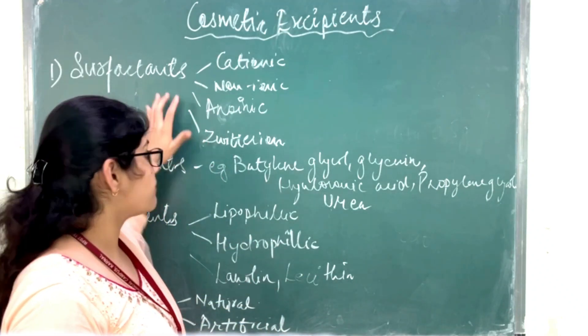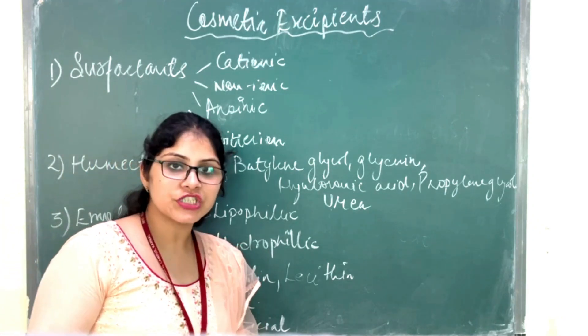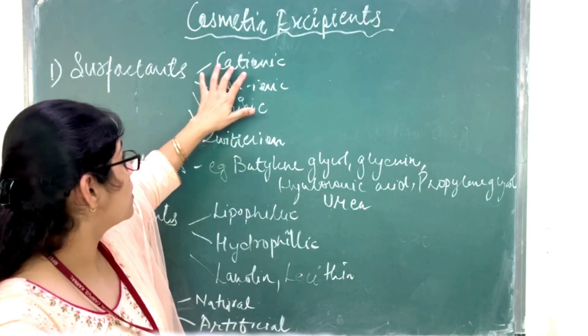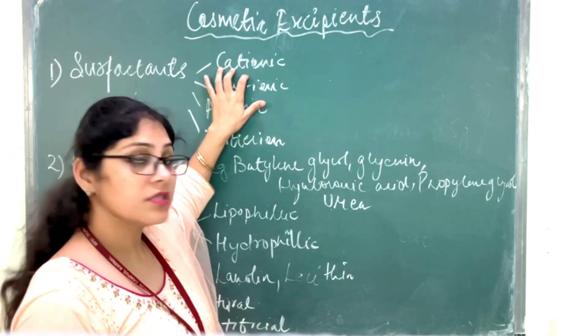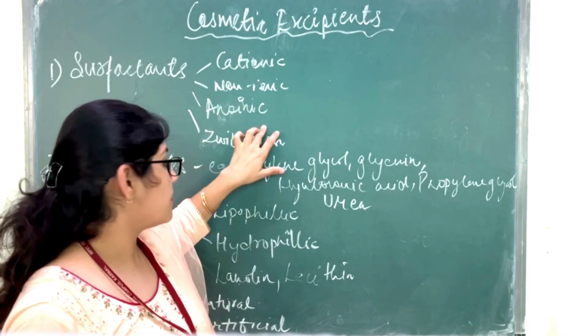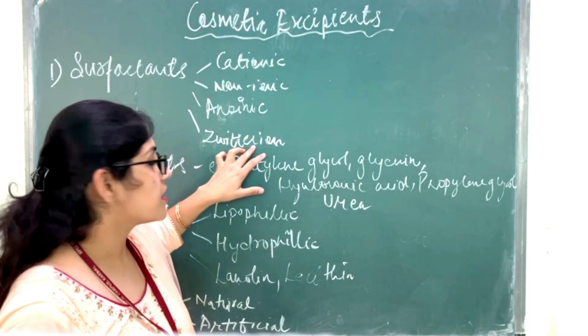As we discussed earlier about cosmetic excipients, the interfacial tension between the two phases. So they are classified on the basis of their charge. They will be cationic, they will be nonionic, they will be anionic and zwitterionic form.